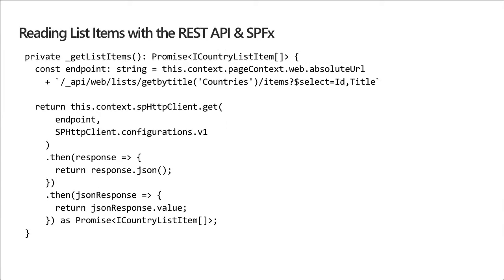To read data from the SharePoint REST API using the SharePoint Framework, we first create a constant endpoint — that's the URL we're submitting to the REST API. It points to the current SharePoint site using the REST API to get the collection of items in the countries list, requesting only the ID and title fields. We execute this by calling spHttpClient.get, passing in the endpoint and the V1 configuration. The V1 configuration sets OData to v4 and enables minimal metadata.